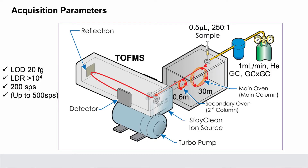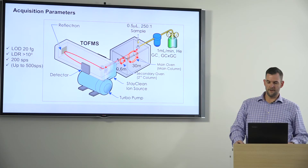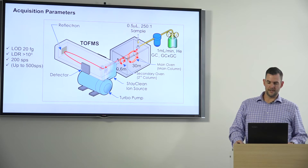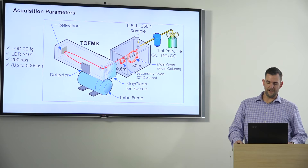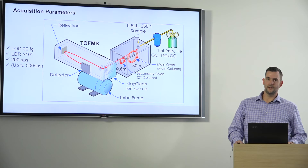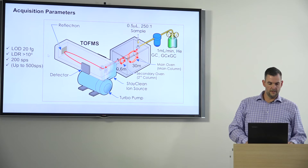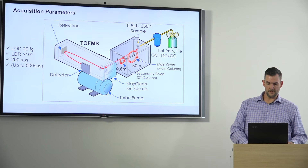Here's a cartoon that depicts how the system is made up of its different components. We have a 30-meter first dimension separation column, which is the RXi-5 — that's our primary separation — coupled with a 0.6-meter second dimension column of a different stationary phase, the RXi-17. The idea is that with different stationary phases, we'll be able to separate analytes that may not have separated effectively on the first dimension. Limits of detection achievable on this system are 20 femtograms, linear dynamic range greater than 10⁴, and the instrument is capable of up to 500 spectra per second.